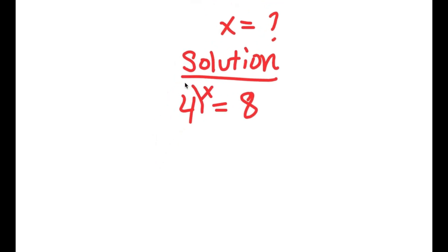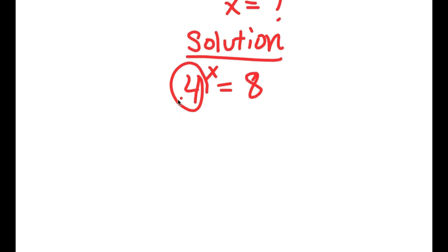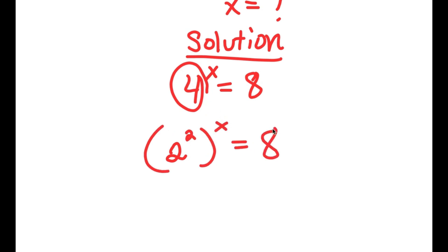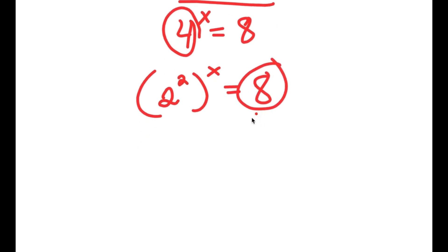Now, 4 is the same thing as 2 squared, so I'm going to rewrite this as 2 squared to the power of x — all I did was replace 4 with 2 squared. And 8 is the same thing as 2 to the power of 3, so I'm going to replace 8 with 2 to the power of 3.